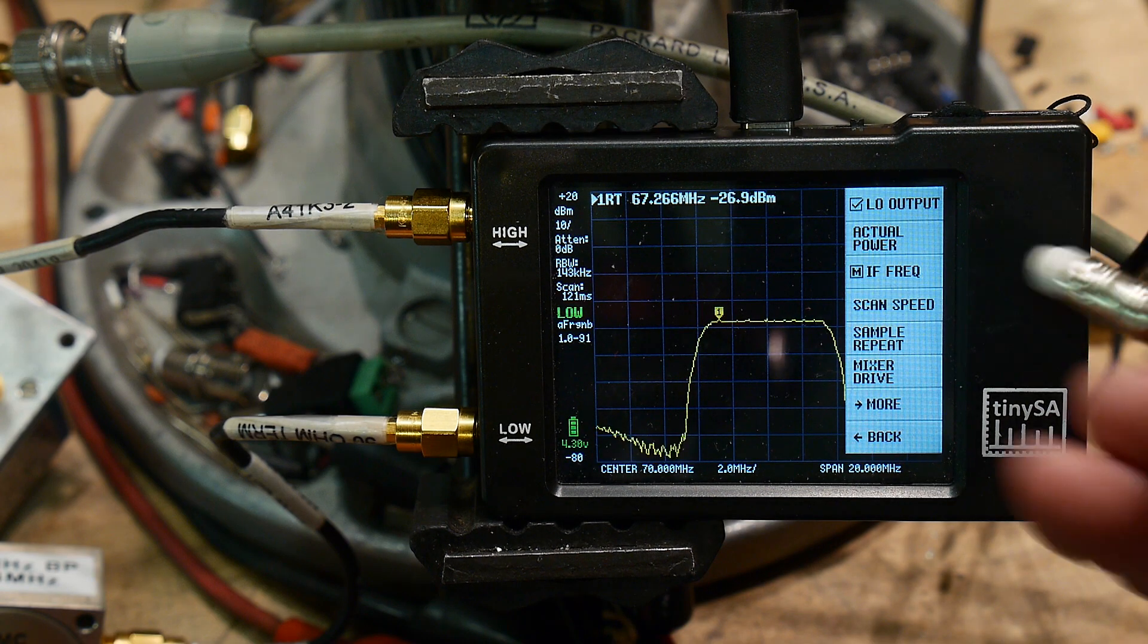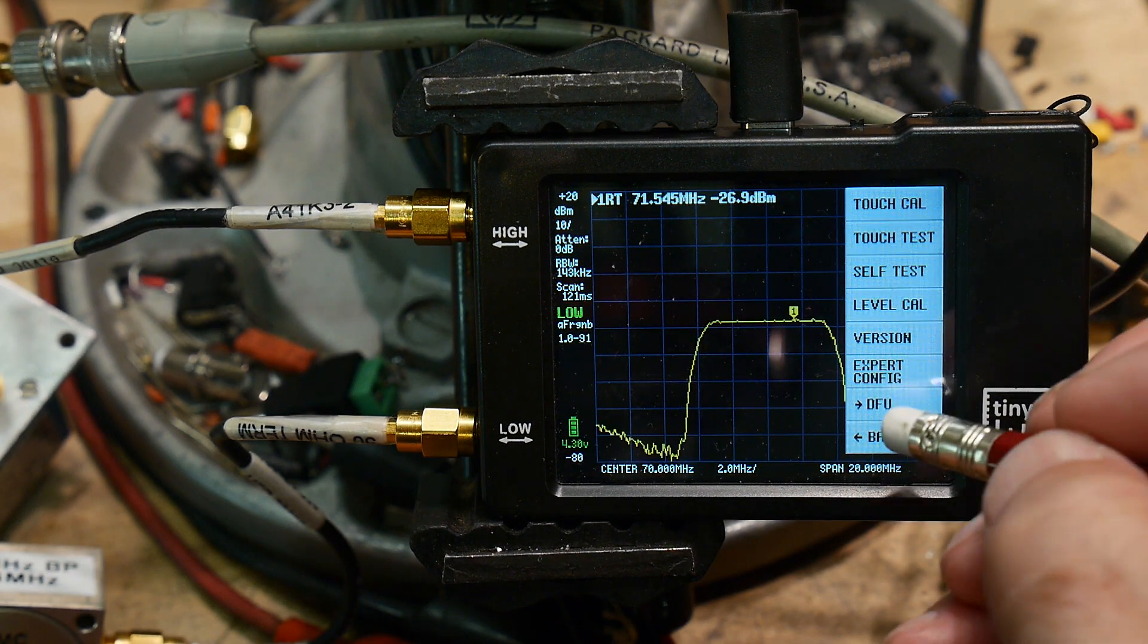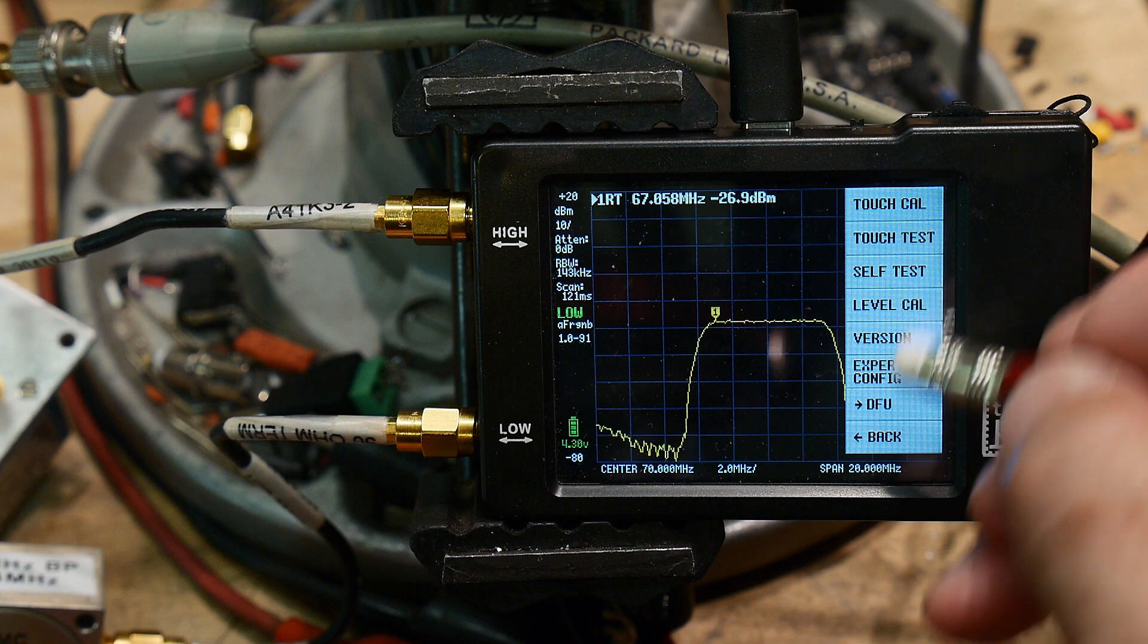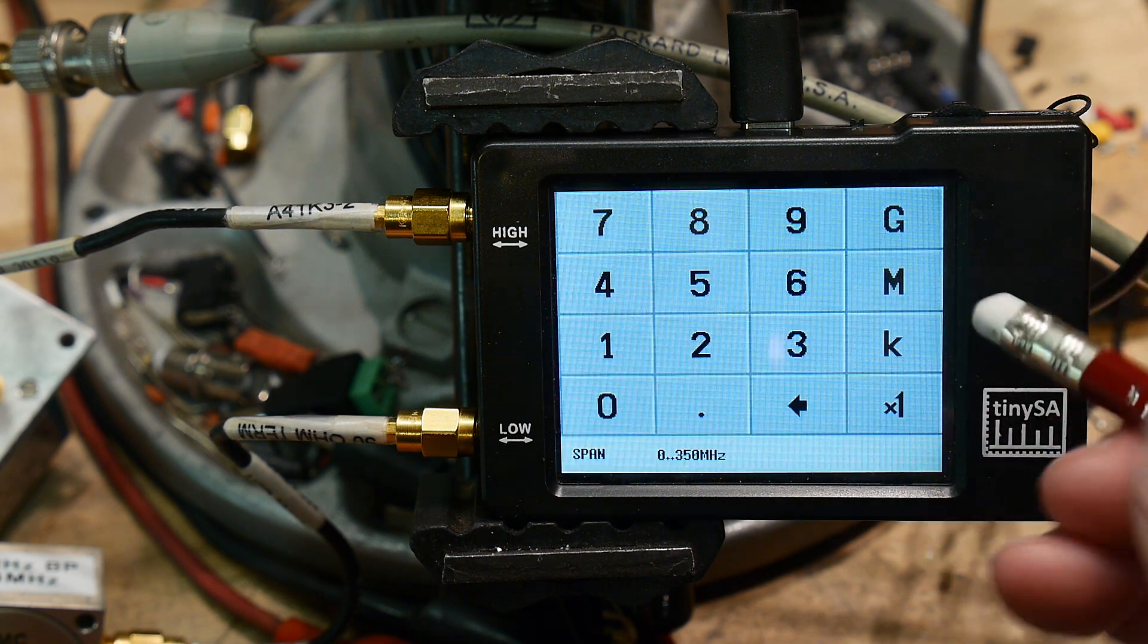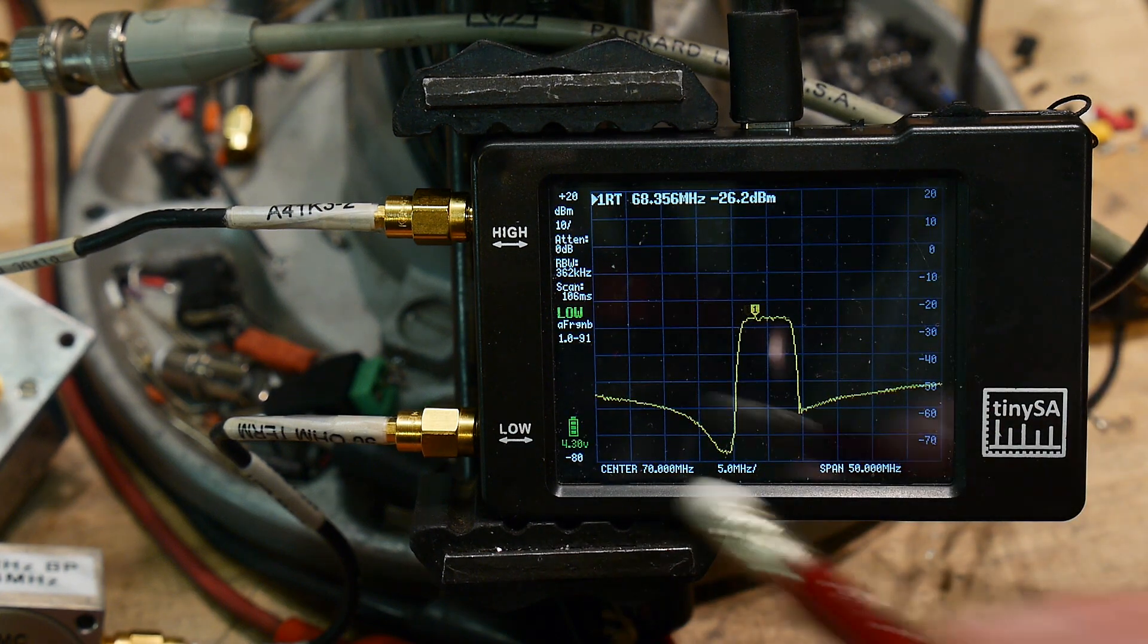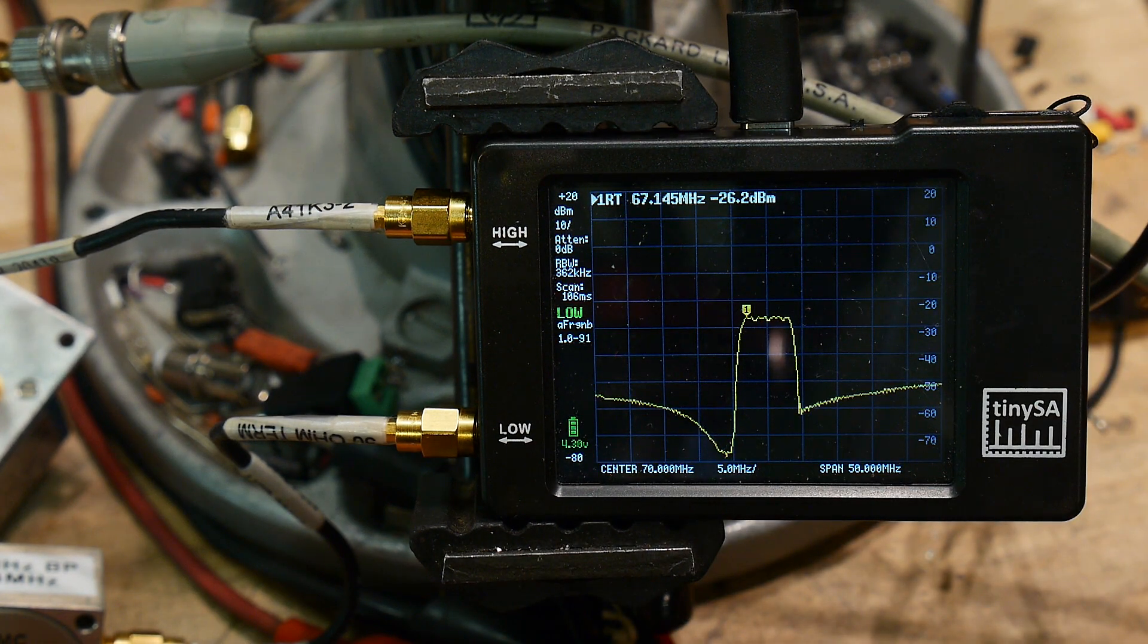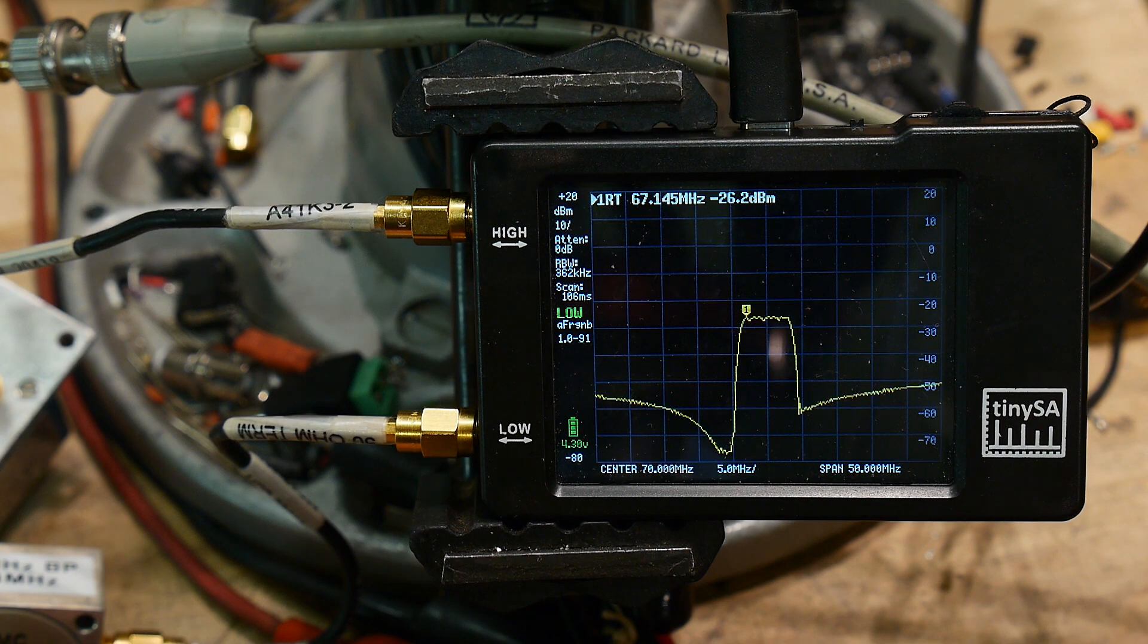And yeah, there we are. We're actually sweeping a filter with a tracking generator. We could go to the frequency span, 50 megahertz. And yeah, there's our filter. So it's cool.